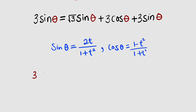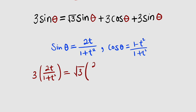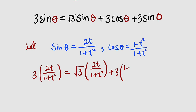On the left hand side we have 3 multiplied by sine theta, which is 2t divided by 1 plus t squared. This is equal to root 3 multiplied by 2t divided by 1 plus t squared, plus 3 multiplied by cosine theta which is 1 minus t squared divided by 1 plus t squared, plus 3 multiplied by sine theta which is 2t divided by 1 plus t squared.